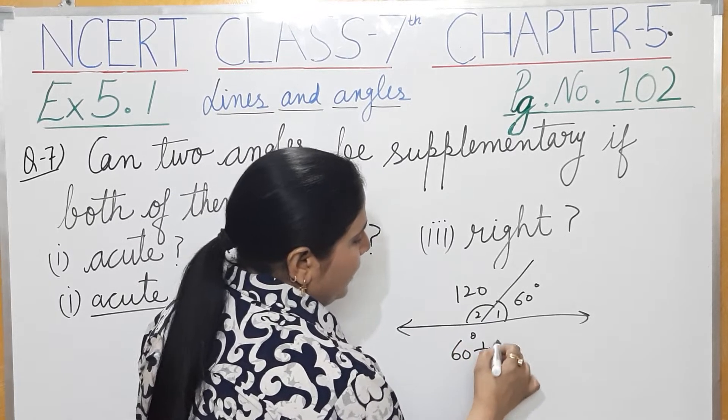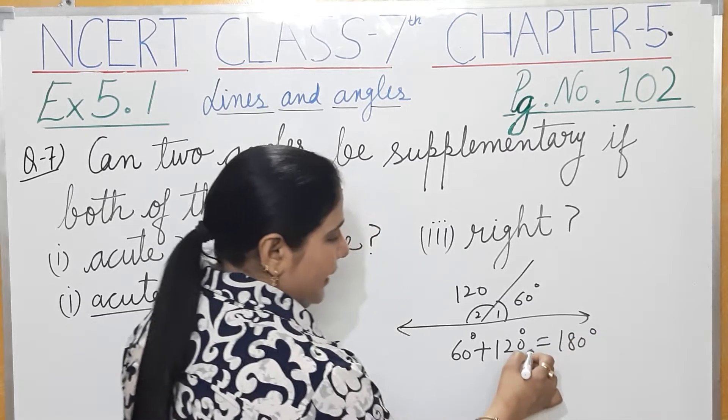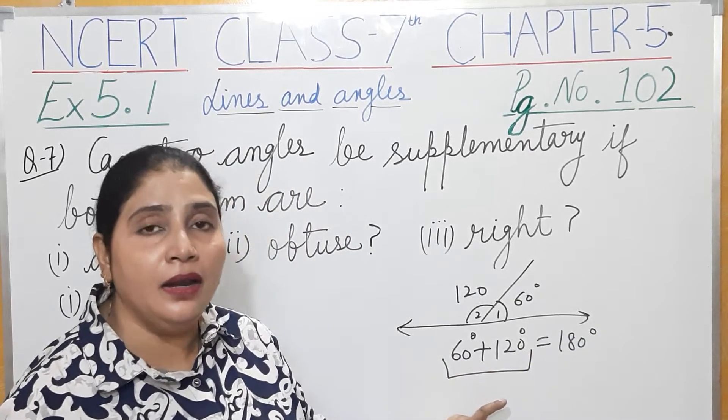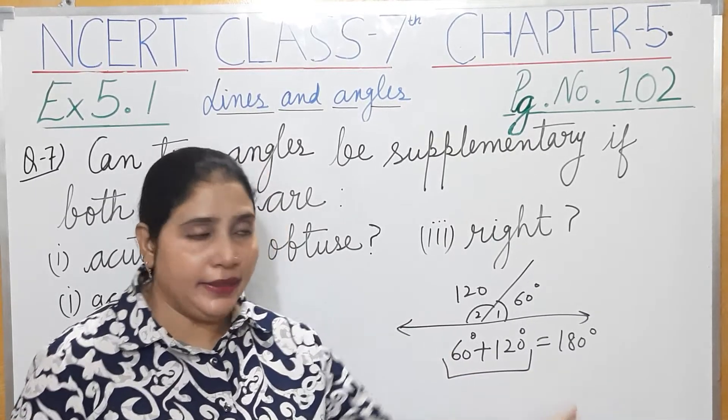So 60 degrees plus 120 degrees equals 180 degrees. We can say that 60 degrees and 120 degrees are supplementary angles. Why? Because these two angles sum to 180 degrees.